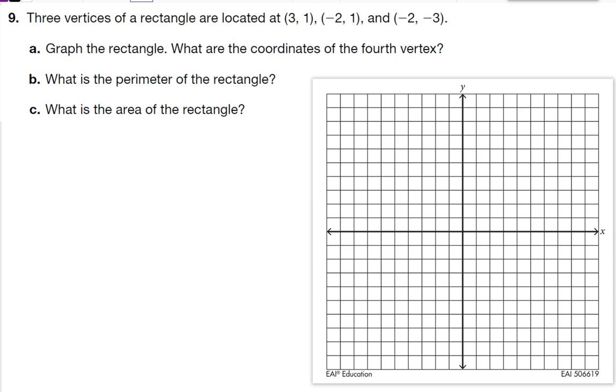So here I have 3 vertices of a rectangle are located at these places. It wants me to graph the rectangle and figure out the 4th vertex. So first I need to graph them. So we have 3, 1. Starting at the vertex, we go over to the right 3, then up 1. Negative 2, 1. Since it's negative, we go to the left 1, 2, then up 1. Negative 2, negative 3. We go to the left 1, 2, down 3. So that's the first 3 points.